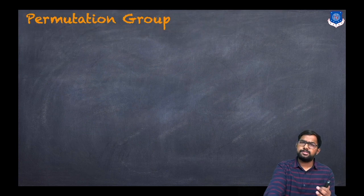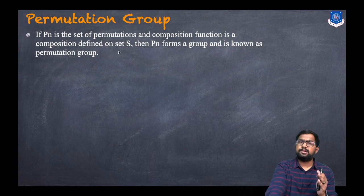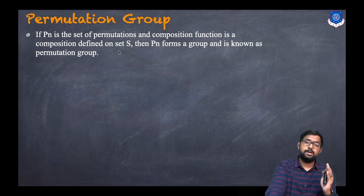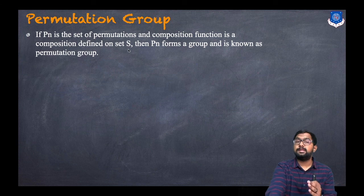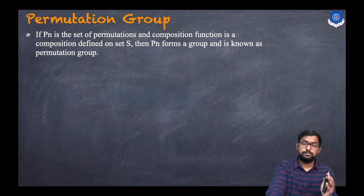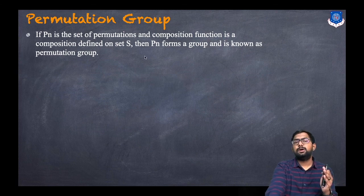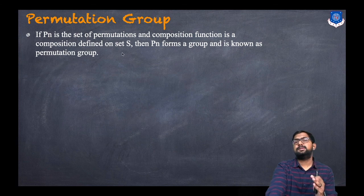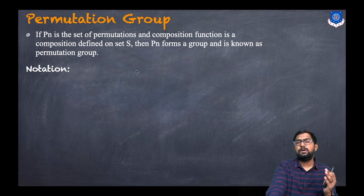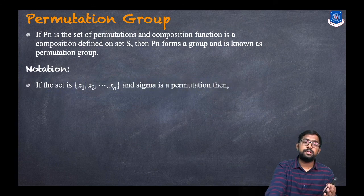What is a permutation group? If P_n is the set of permutations and composition is the operation defined on the set S, then P_n forms a group and is known as a permutation group. We know what a group is, so if composition is defined on S, then P_n forms a group.